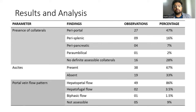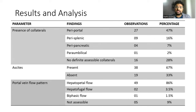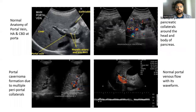Regarding portal vein flow pattern, 86% of the patients had normal hepatopetal flow, while two patients had hepatofugal flow, and only one patient had biphasic flow, that is, to-and-fro flow pattern.